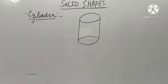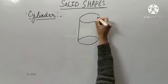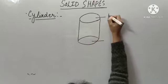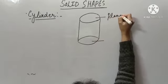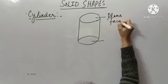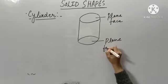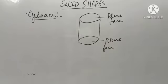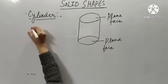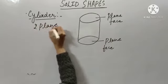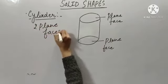This is my cylinder. These are the two plane faces. This is also my plane face of the cylinder. That means, cylinder has two plane faces.